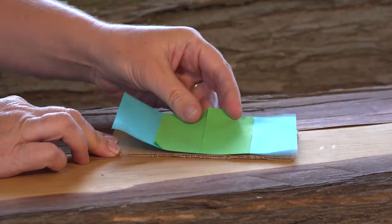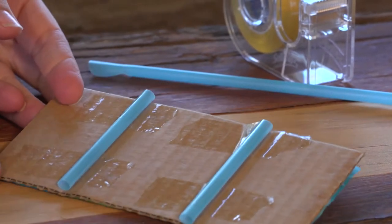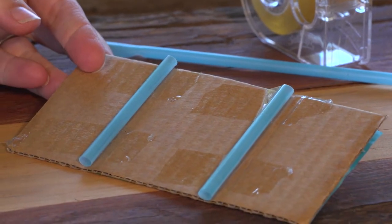You can then decorate one side if you would like. Then, on the other side, cut and sellotape your straws on like this.